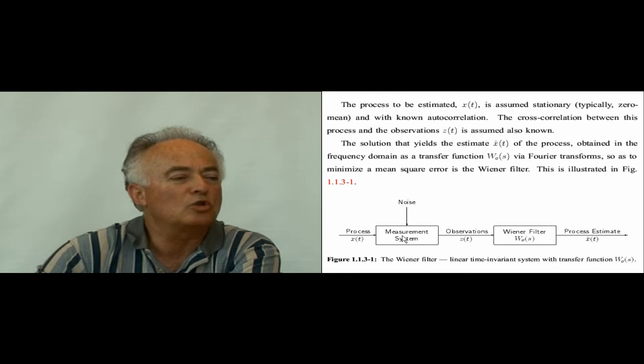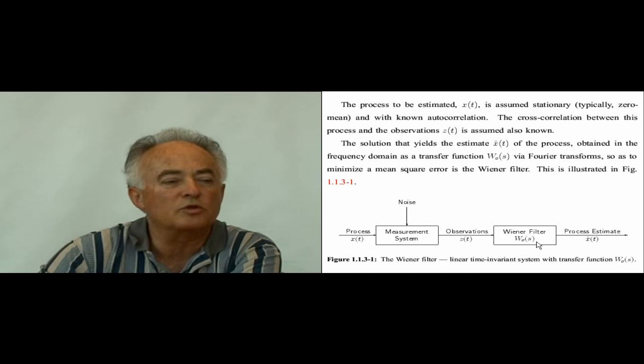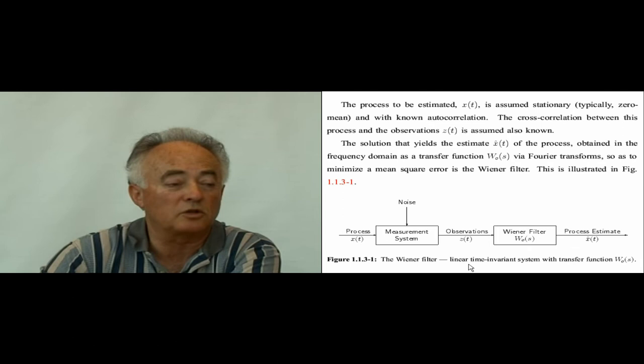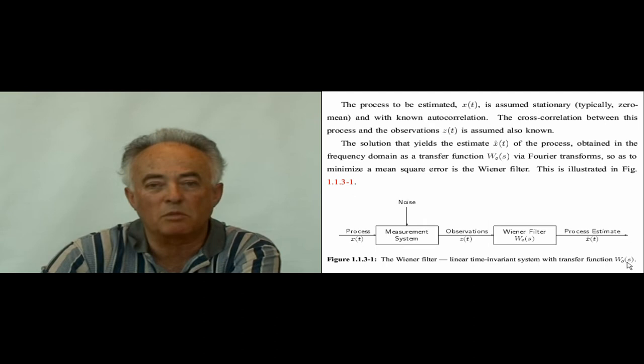Here is the Wiener filter process: X(t) goes into the measurement system, but is perturbed by noise, so we don't have direct access to X. We do have access to the observation Z(t), which goes into a system described by a transfer function — the Wiener filter — and out comes the process estimate X-hat(t). This is a linear time-invariant system whose transfer function is obtained based on the statistical descriptions of X(t), Z(t), and the noise.